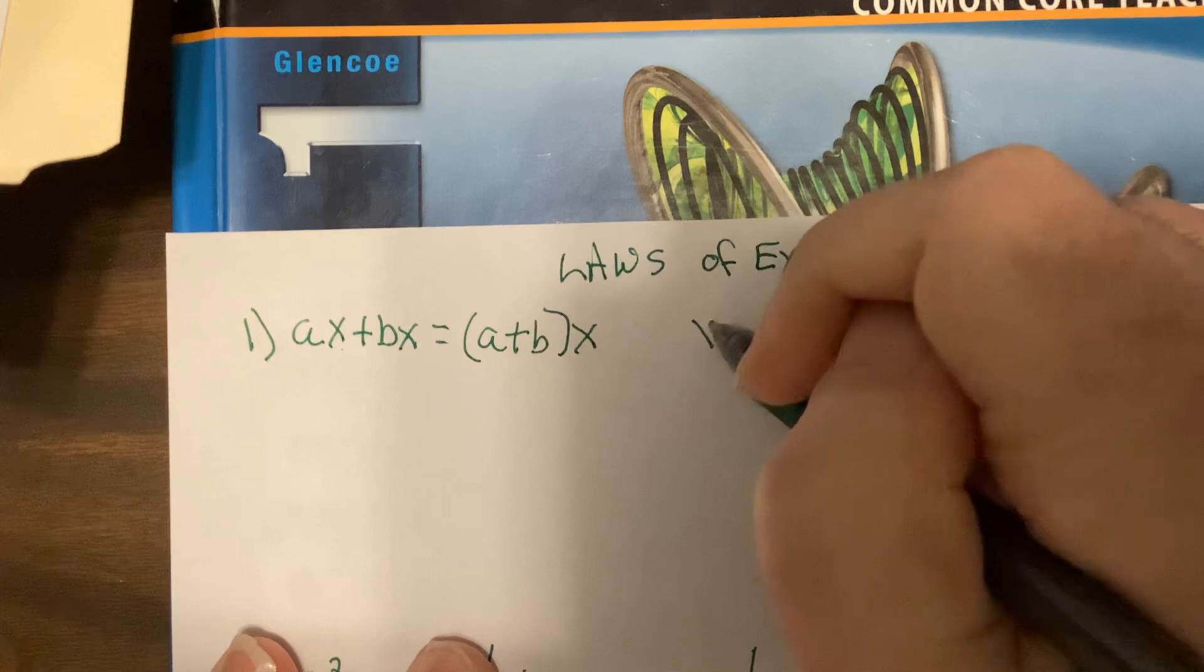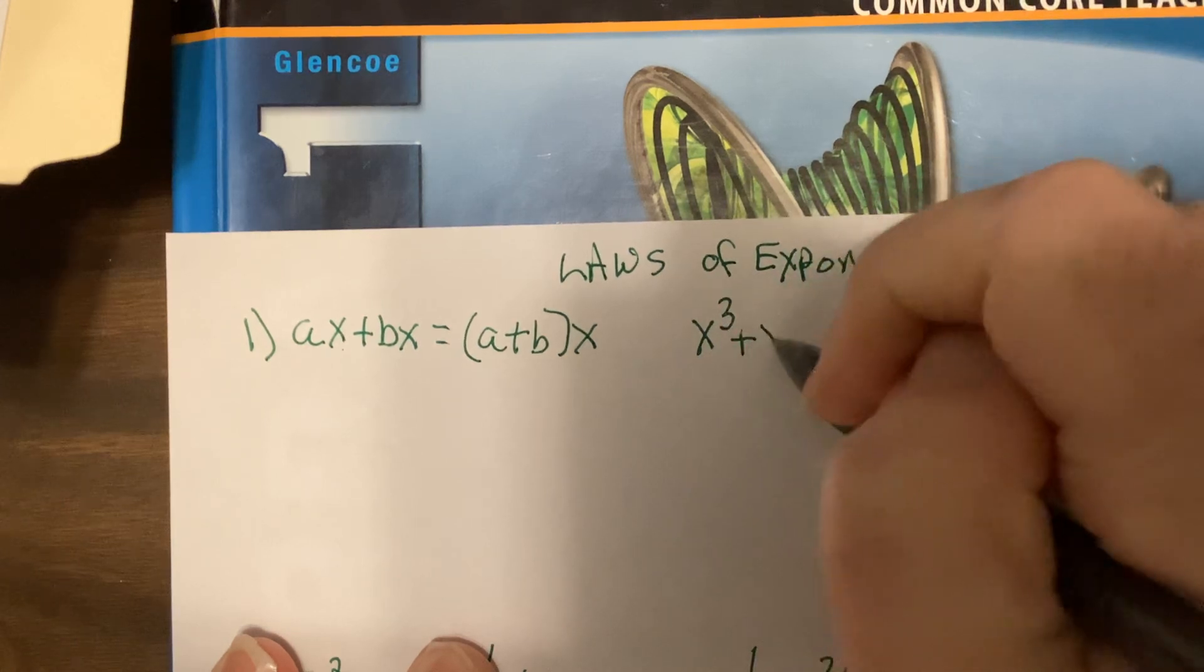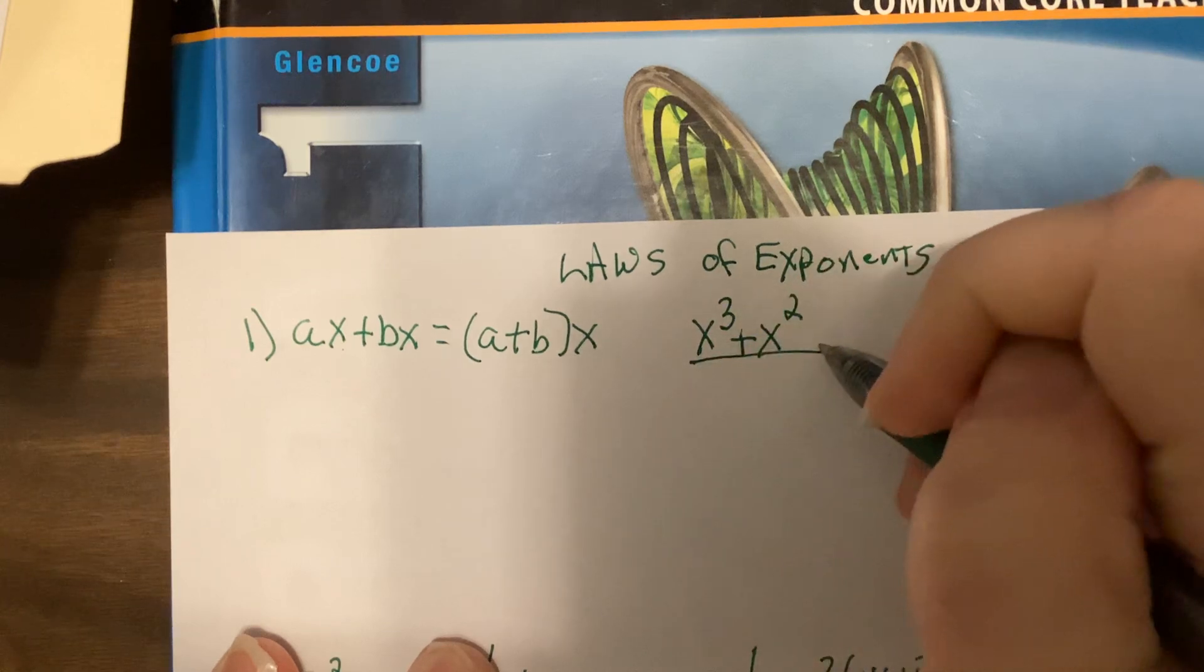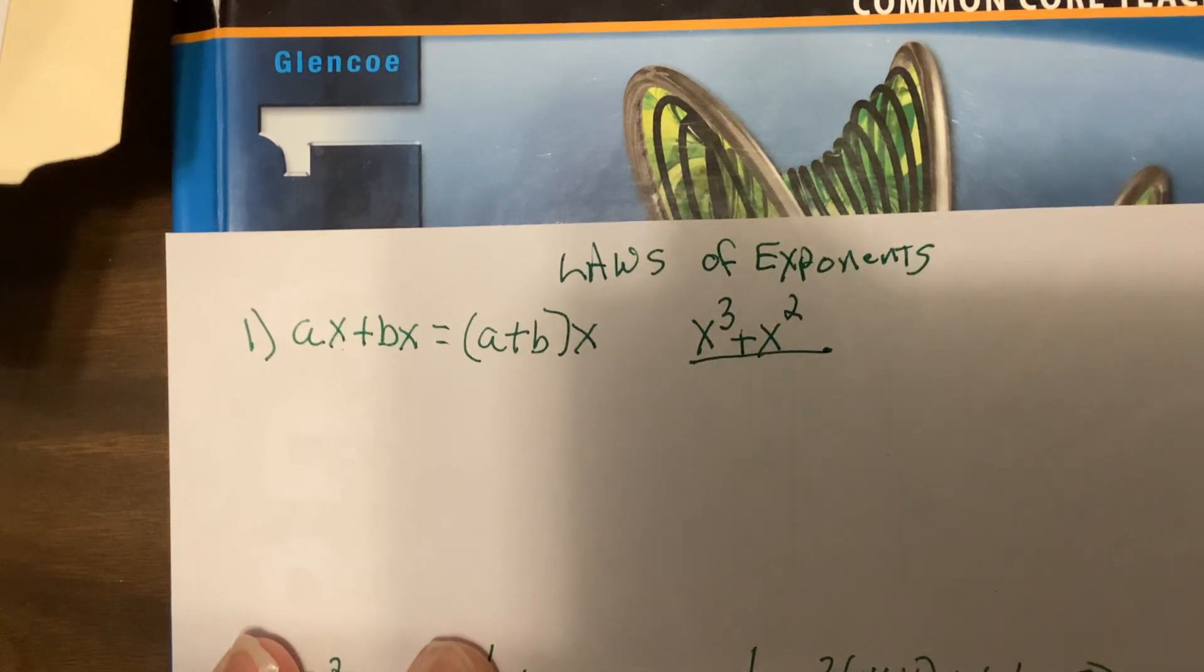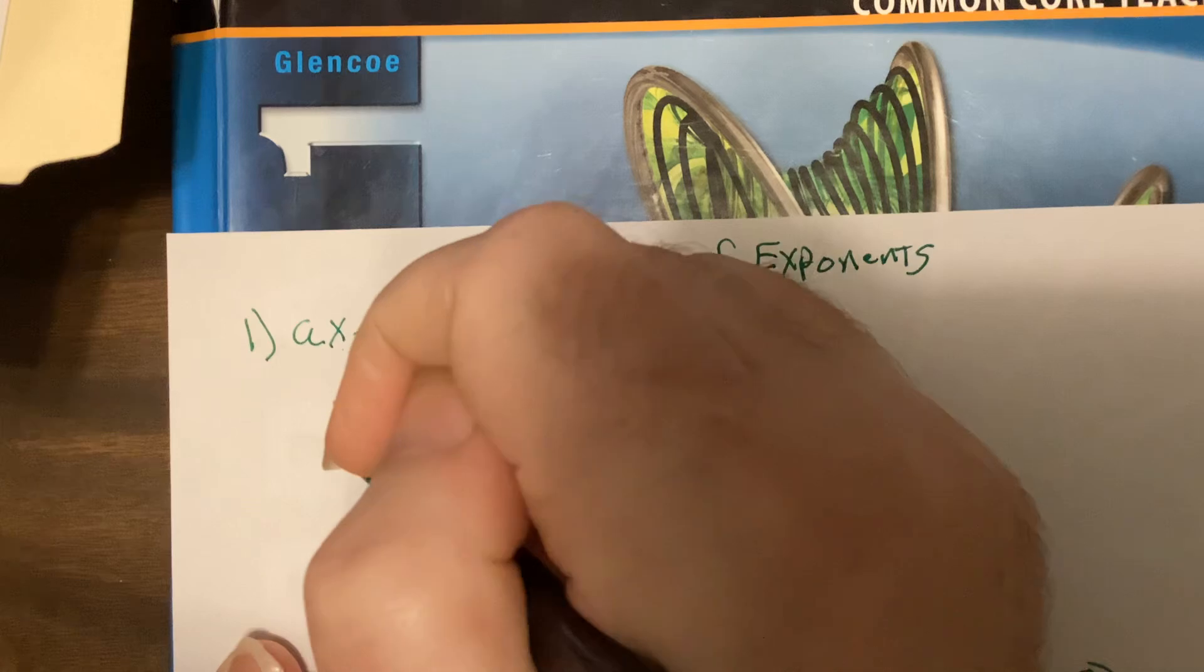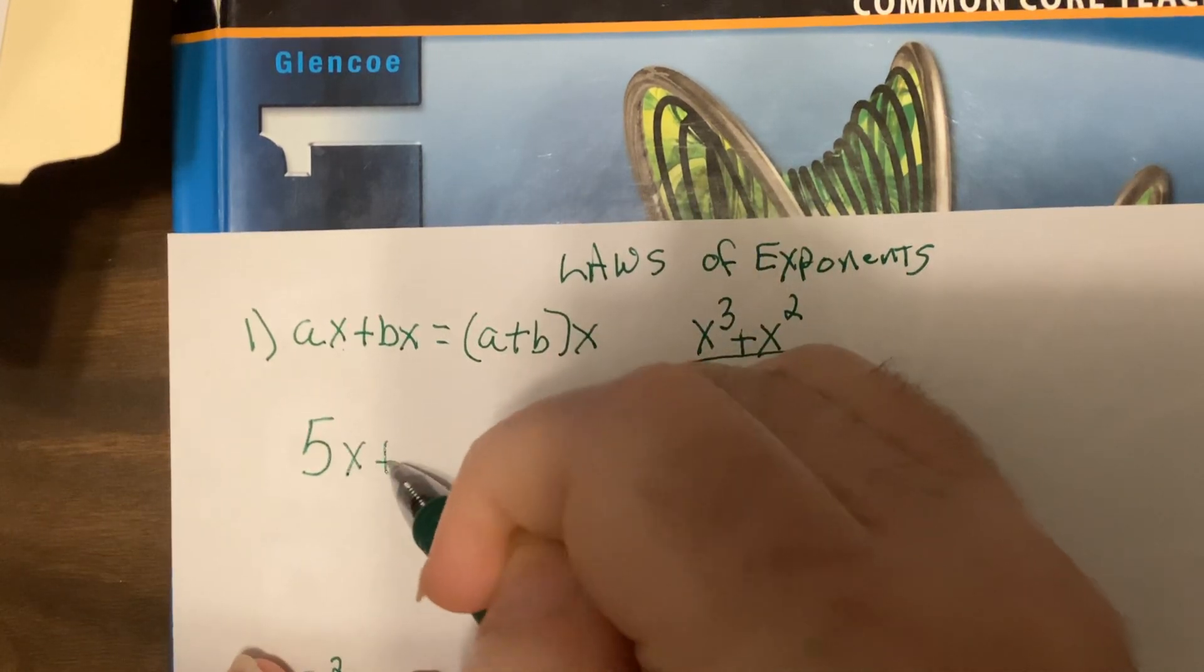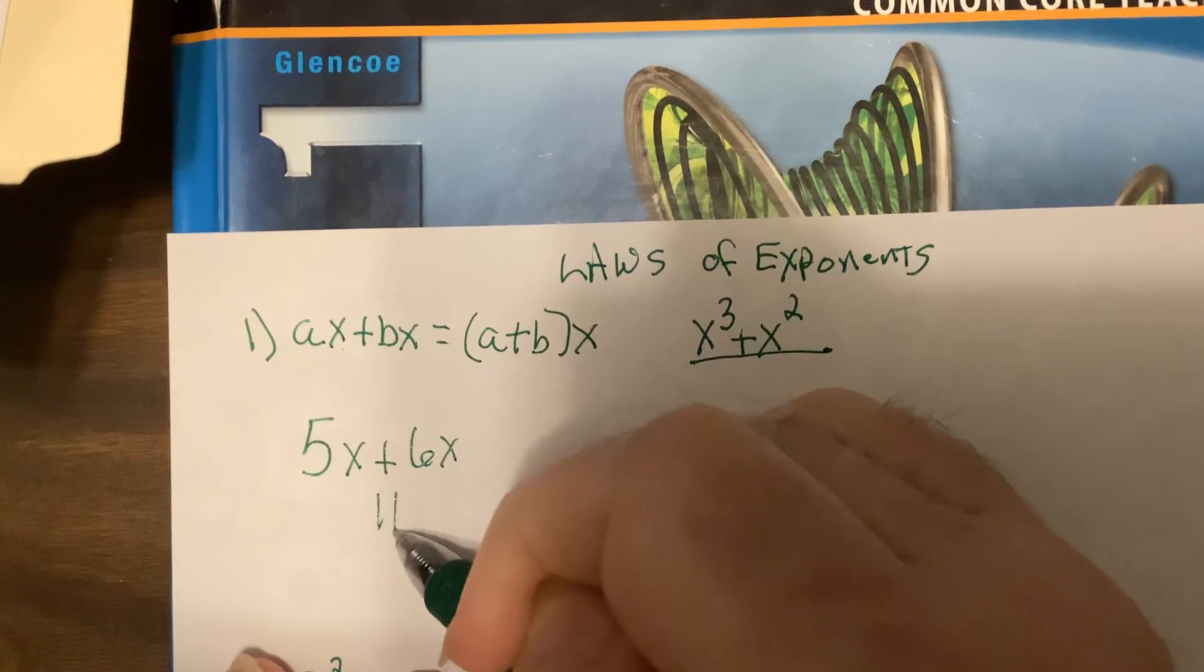But they're both X's and they both have the same power. So if I had X cubed plus X to the second, I'd say done. It's called prime. I can't do any more to it. But if I have 5X plus 6X, that would be 11X.